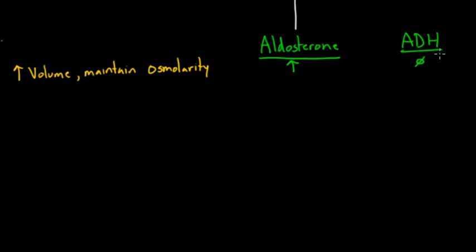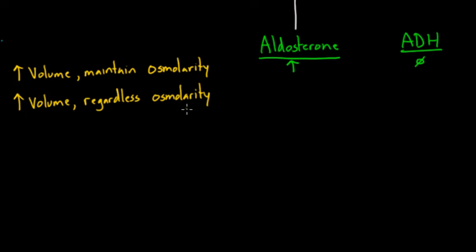Now let's say you wanted to increase volume regardless of osmolarity — meaning you don't really care if osmolarity changes. This could be like a big car accident where you're bleeding out and the only thing you care about right away is increasing your blood volume fast. In this scenario, you're definitely going to want to use everything available to you — both aldosterone and ADH. The fact that osmolarity will go down with ADH really doesn't matter, so we employ ADH this time.